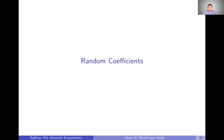Now that we've talked about choice probabilities and how we might think about coefficients as being random, let's talk more about actually rationalizing this model by talking more about these random coefficients. We're going to do that in the next video.